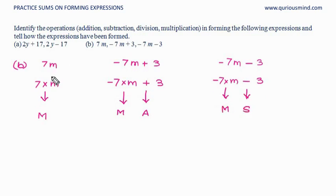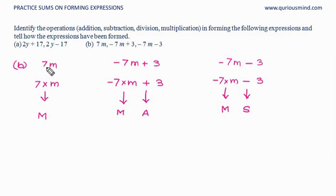Please understand that in terms like 7m, we do not see a multiplication sign, but there is an implied multiplication because a number and a letter come together — we simply do not show the multiplication sign.